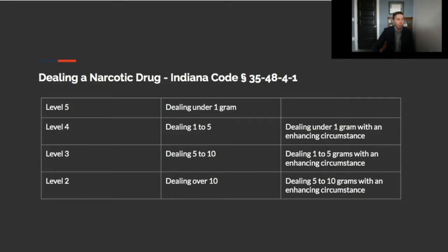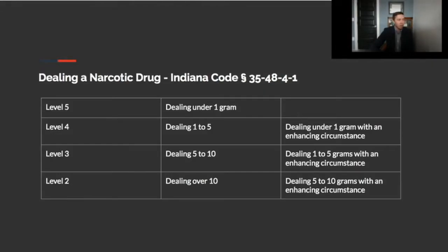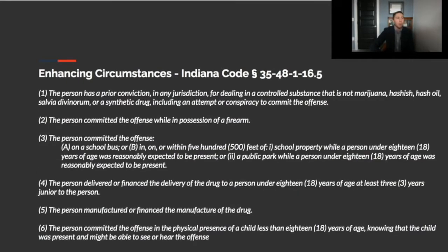It's also important to note that there's things that are known as enhancing circumstances that elevate the level of the crime. And here's a list of what these enhancing circumstances are. It can be found in 35-48-1-16.5. And essentially, it says that there's different things that can enhance a drug offense. For instance, committing the offense while in possession of a firearm, committing the offense around children. Things like that can enhance the penalty, which if you're caught with a lower amount of the drug, for instance, if you're caught with 1-5 grams with an enhancing circumstance, you're then charged at a higher level, at a level 3. So that's how that works. So it's important to note whether or not there's enhancing circumstances charged in your case.